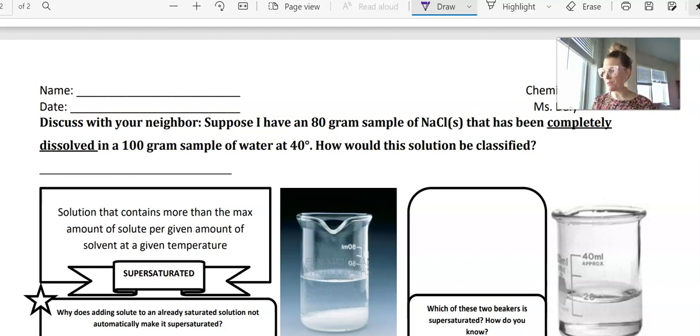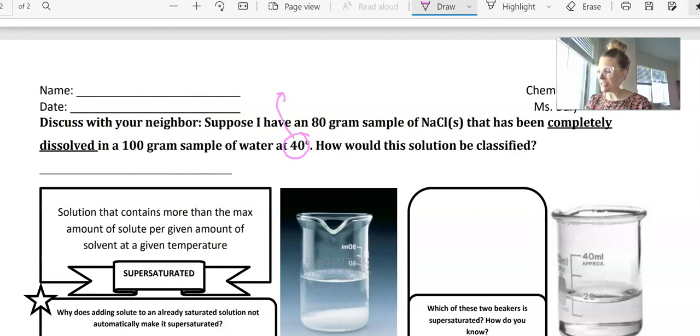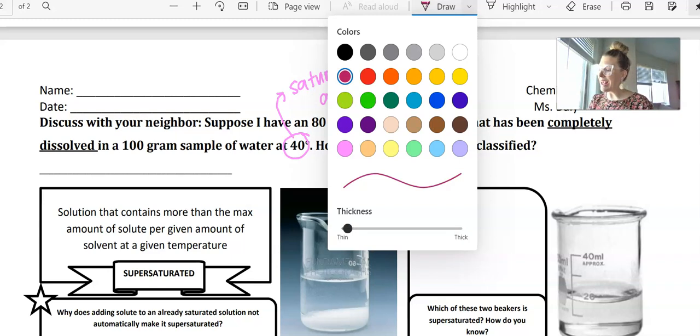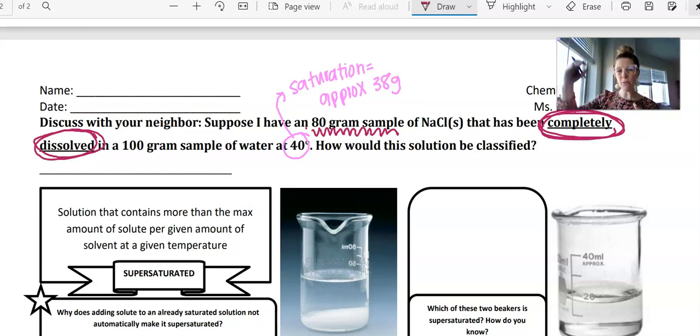Suppose I have an 80-gram sample of NaCl that has been completely dissolved in 100 grams of water at 40 degrees. How would this solution be classified? Now, I want to point out here that if you look at the curve of NaCl at 40 degrees in 100 grams of water, the point of saturation is about 38 grams. However, in this problem, it tells us that we've dissolved 80 grams and key words, again, completely dissolved. When you see that term completely dissolved, those are the key words here to indicate supersaturated. You have to see those terms completely dissolved and be above the point of saturation in order to be supersaturated. So this would be supersaturated.